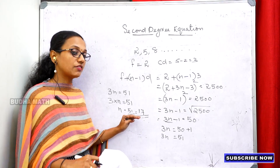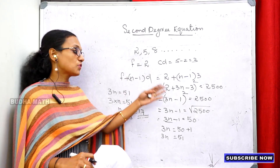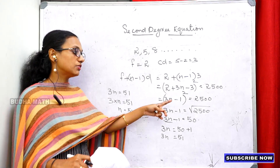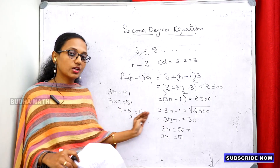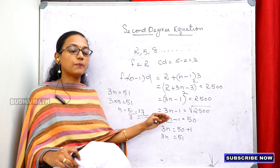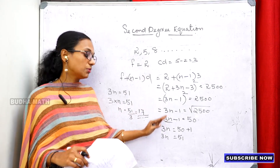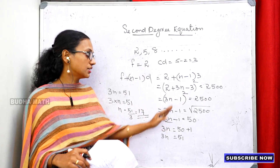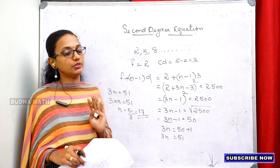So the 17th term of the arithmetic sequence has a square value of 2,500.